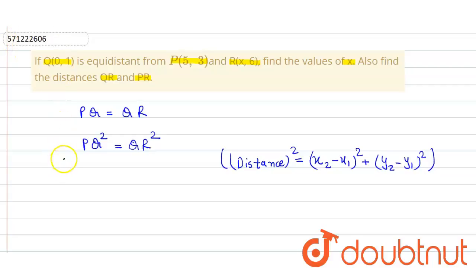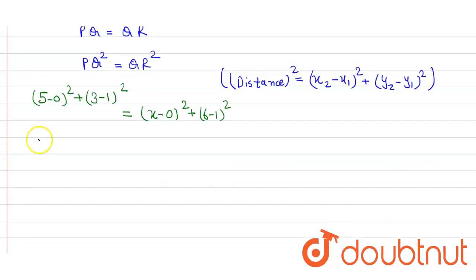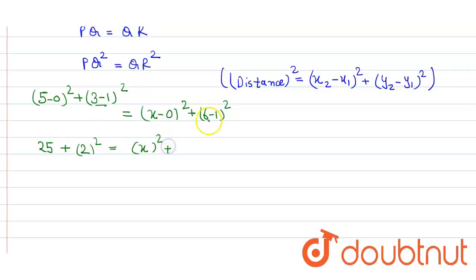Applying the distance formula for the distance between P and Q: (5 - 0)² + (3 - 1)² = QR². That gives 5² + 2² = x² + (6 - 1)². So 25 + 4 = x² + 25. This 25 cancels with the other 25, giving x² = 4.